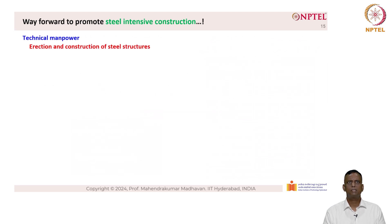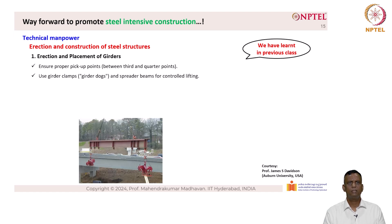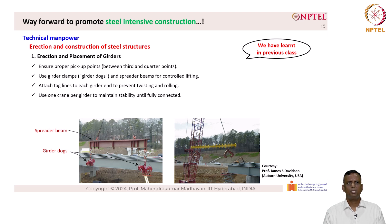Now let's look at technical manpower, which is required for erection and construction of steel structures. In the previous class we learned about the erection and placement of girders, which requires ensuring proper pickup points between third and quarter points, using girder clamps or girder docks and spreader beams for controlled lifting. The picture here shows lifting procedures using girder docks and spreader beams. Attach tag lines to each girder end to prevent twisting and rolling. Use one crane per girder to maintain stability until fully connected. Align and bolt the girders at splice locations before releasing crane support.